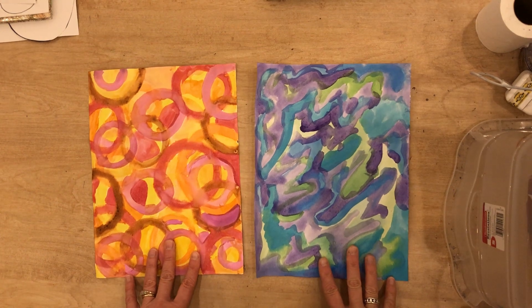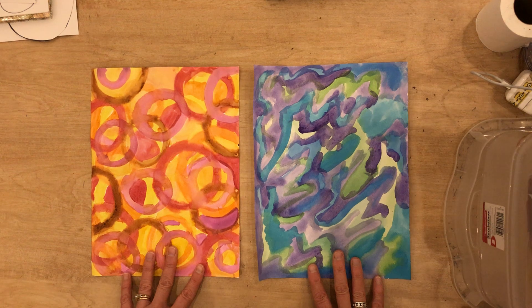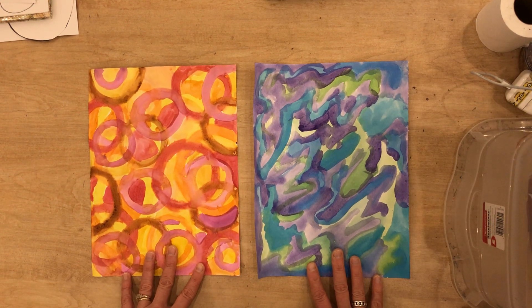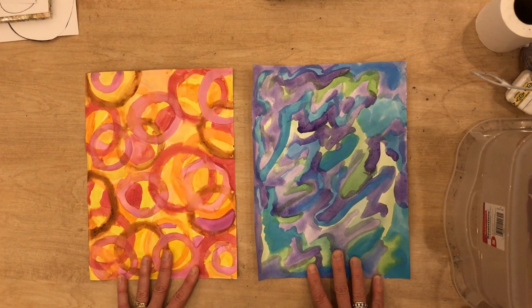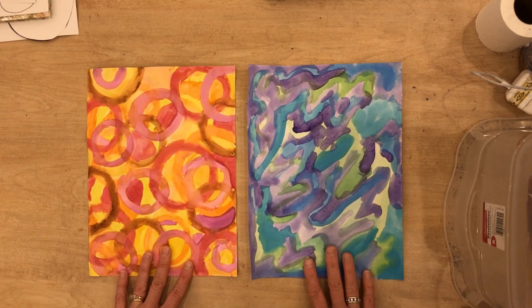Now it's time to prepare our watercolor painted papers to cut them into strips so we can weave them. The first thing we're going to do is fold our paper, each one of these, in half.